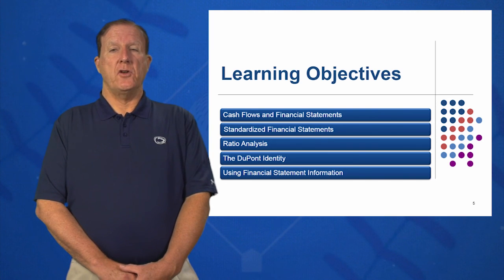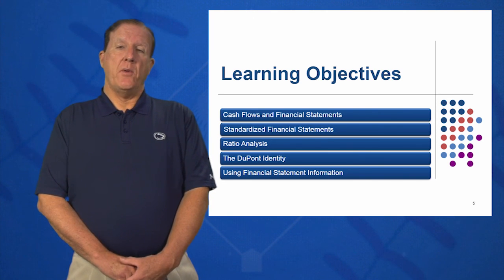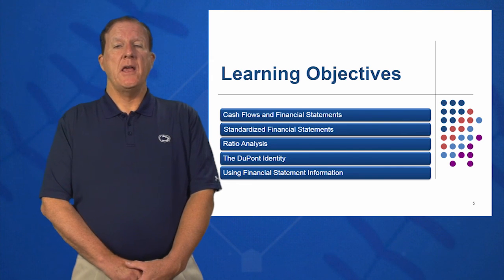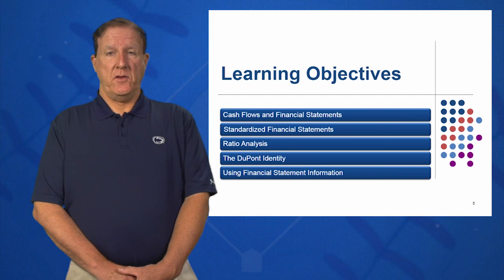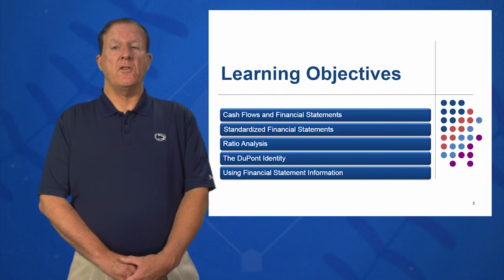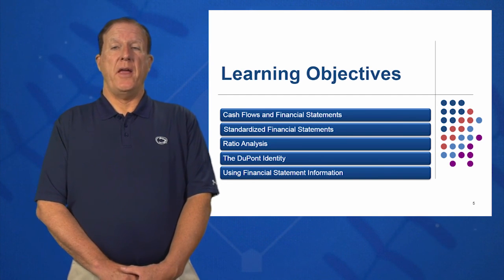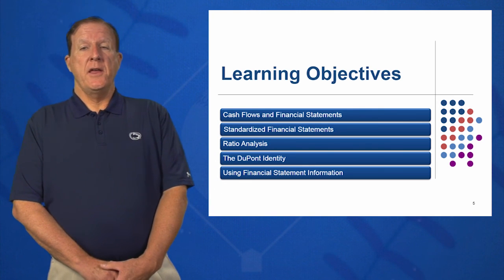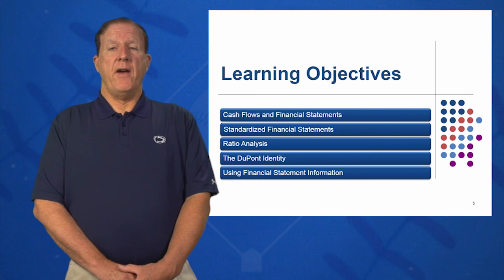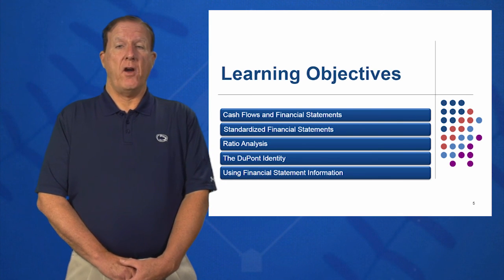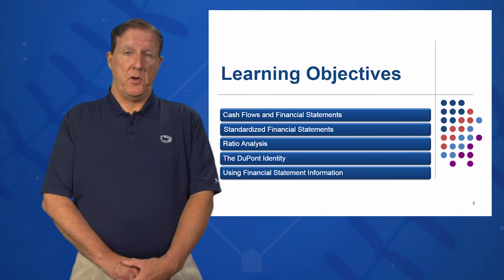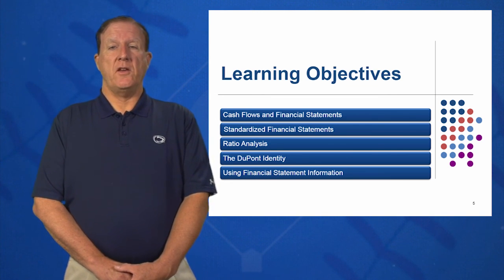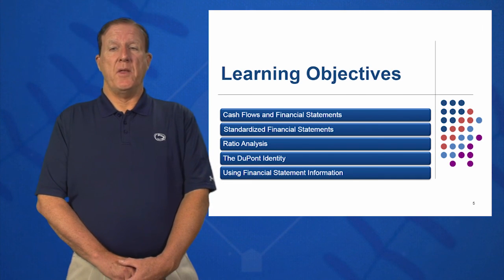The DuPont identity measures return on equity, and we should know this very critical ratio — net return on equity. We're going to break that down into three pieces in the DuPont identity analysis. And finally, what do we use all this financial statement information for? All these ratios can be used to measure performance and the value of our acquisitions, our competitors, and our customers.